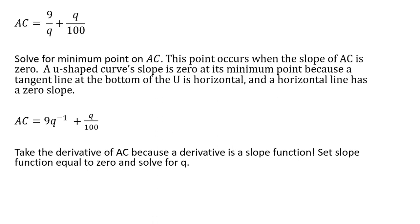We take the derivative of average cost — since the derivative is a slope function — and we set that slope function equal to zero and solve for Q. We're trying to find where the level of output corresponds with the bottom of the U on this U-shaped cost curve, where the slope is zero and the tangent line is horizontal at that point.